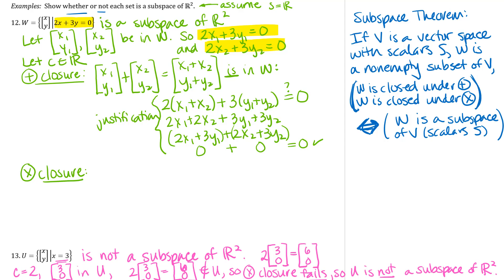So I'm going to let C just be an arbitrary scalar in the real numbers. And then what I want to show is that that arbitrary scalar times any vector in the set, I'm just going to use my X₁, Y₁ that we had from before. And what I want to show is that that product CX₁, CY₁, I want to show that that is in the set W. So that would be showing scalar multiplication closure. So here's my justification.